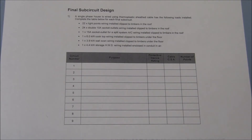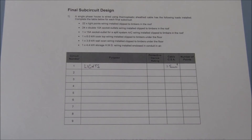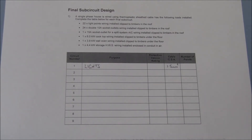Let's begin with the 22 light points. Circuit number one will be a light circuit. The cross sectional area for the cable I've decided to use is 1.5mm squared. You could use 1mm squared cable for a lighting circuit, however I've decided to go with 1.5mm squared. Now that we've determined our cable size, we need to work out what size protective device rating we'll have. For this, we're going to refer to table C6.